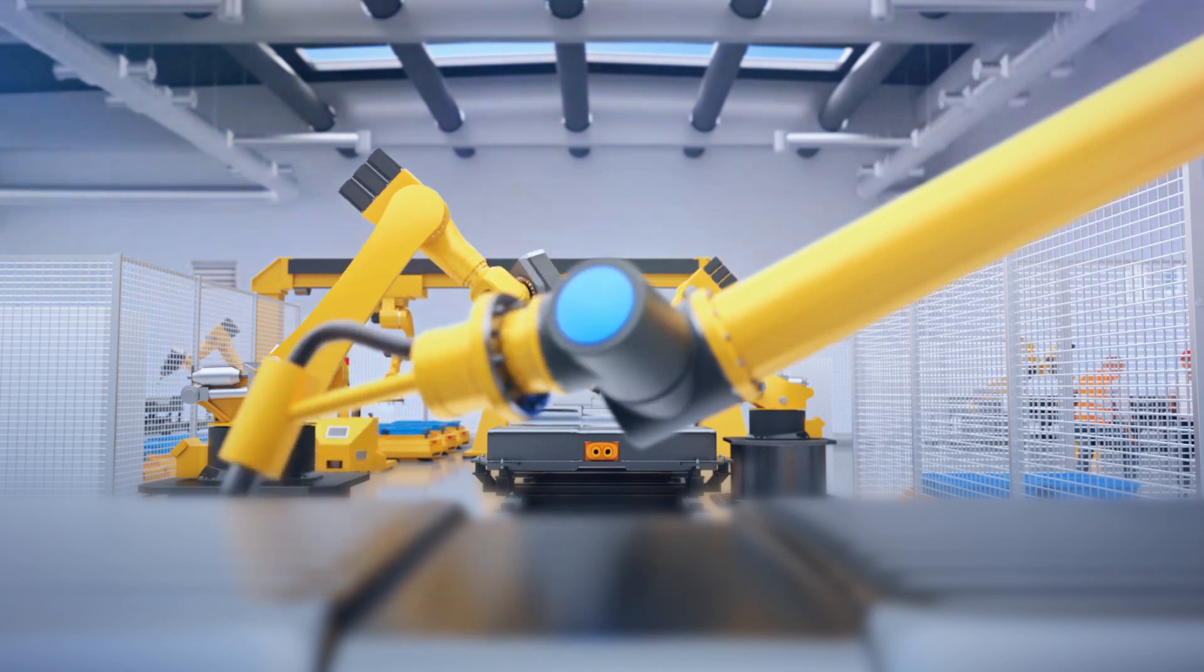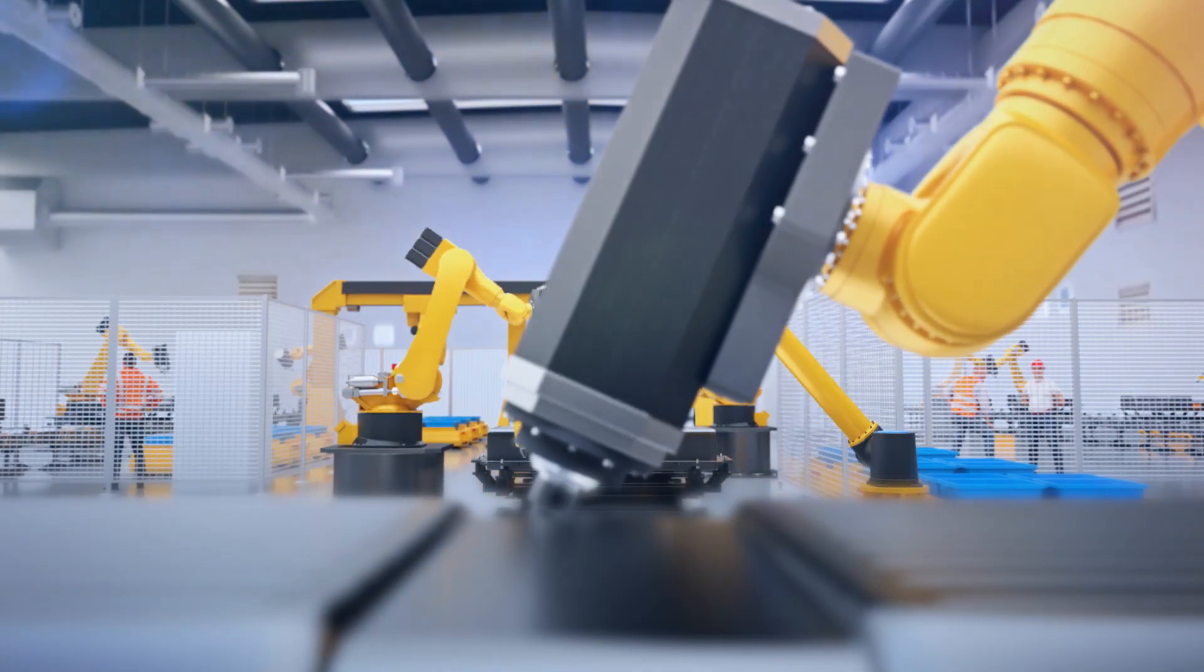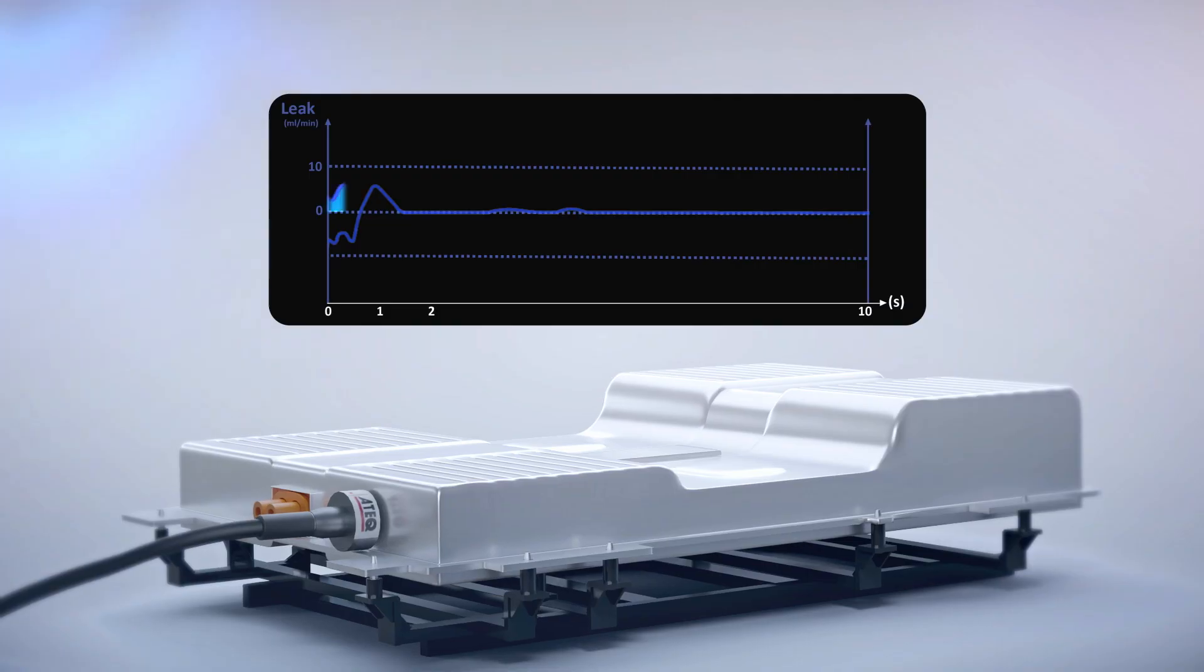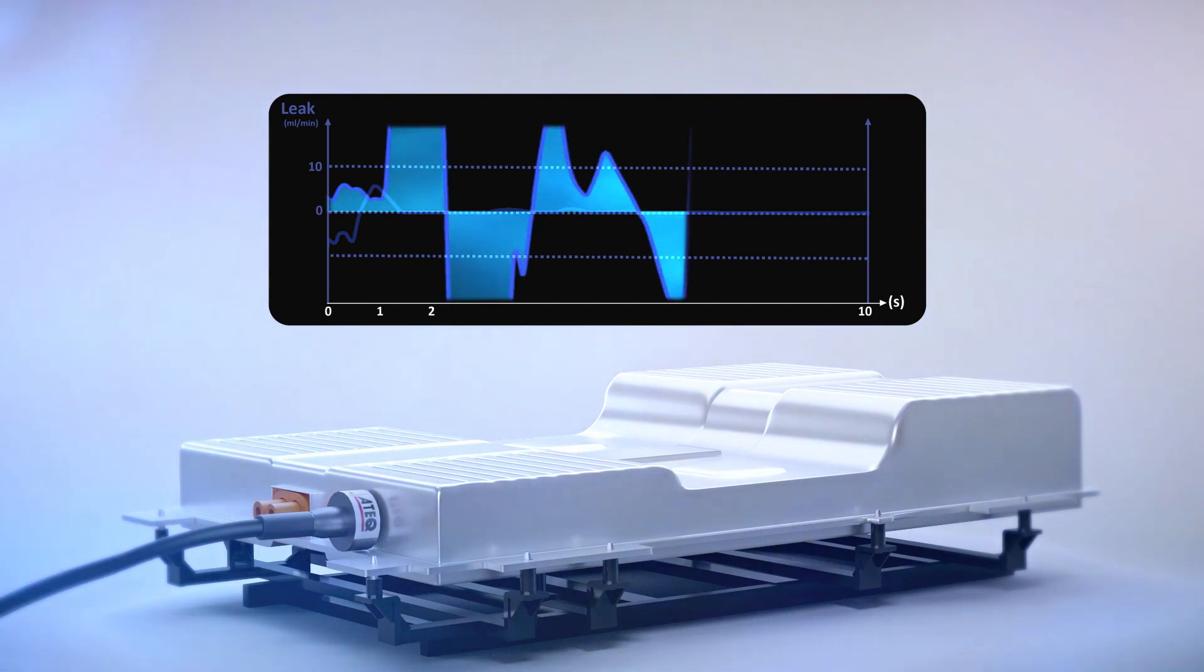A factory is full of fluctuations in temperature, atmospheric pressure, and vibrations which can affect a leak rating and cause the leak tester to incorrectly pass or fail a part.